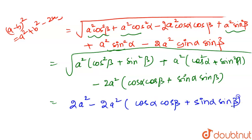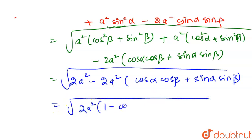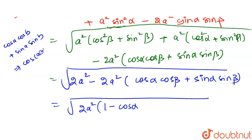Taking 2a² common and applying the identity for cos(α - β), we factor the expression under the root as 2a²·[1 - cos(α - β)].